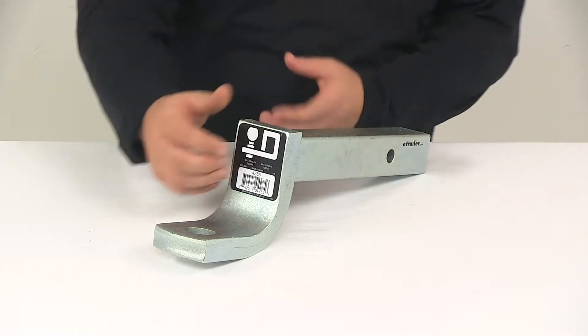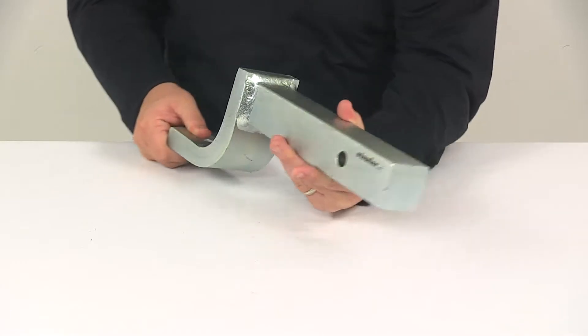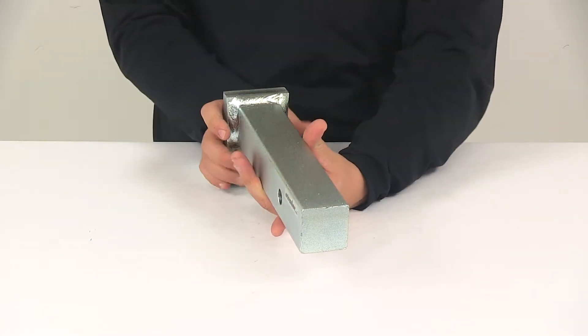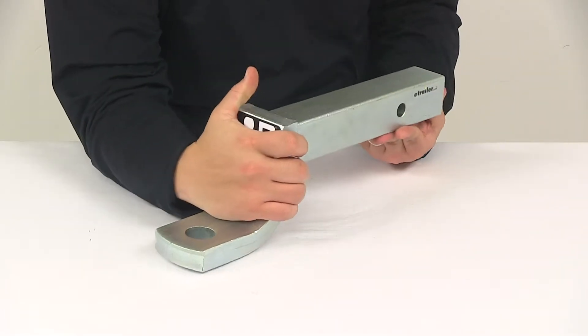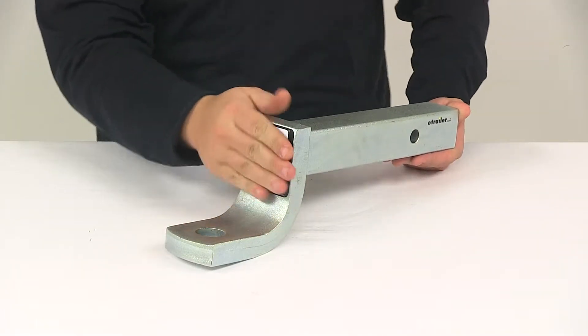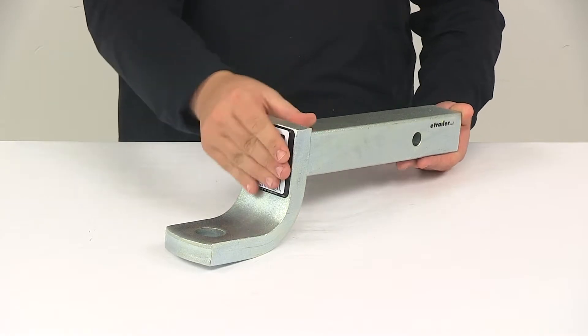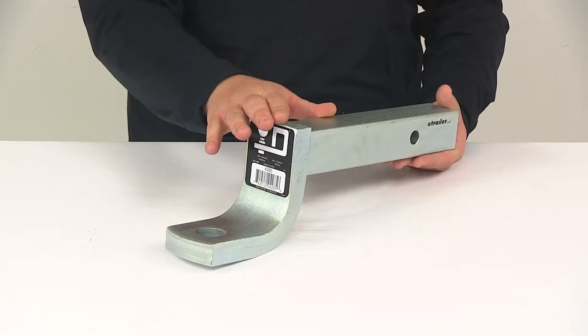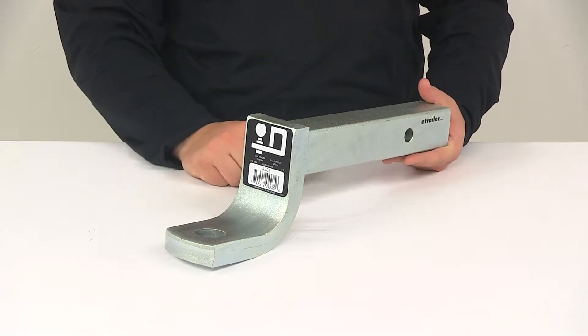The unit is made from a sturdy steel construction. It's going to feature a solid shank design for maximum strength and durability, and the unit features a zinc coated finish. It gives it a really nice look, and that zinc coating is going to do a great job at protecting the mount from rust and corrosion, making sure that it lasts and looks good for a long time.